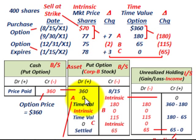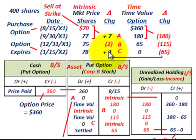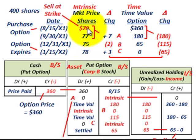Looking at intrinsic value: the option has no intrinsic value in this case because the strike price is below the market price. There's no intrinsic value to record in the put option account, so we show zeros for all periods. For each period — the first period increase to $77, the second period decrease to $75, and the final expiration at $78 — the intrinsic value is zero, and the unrealized holding gain or loss is also zero.